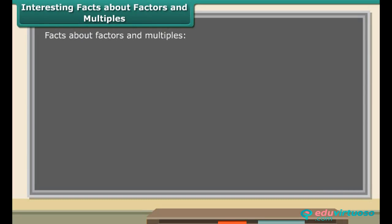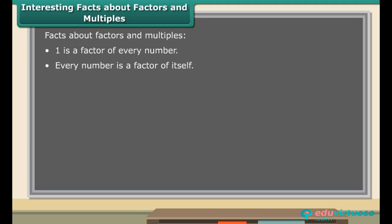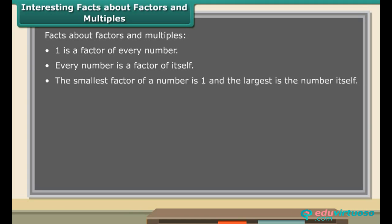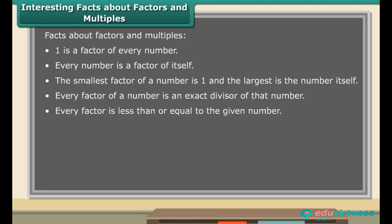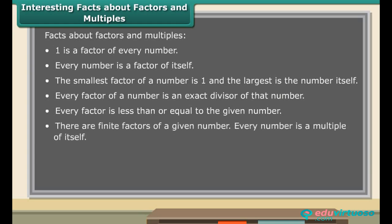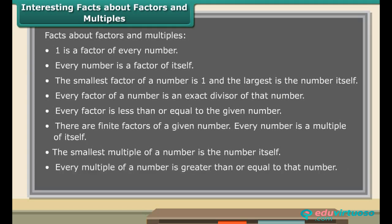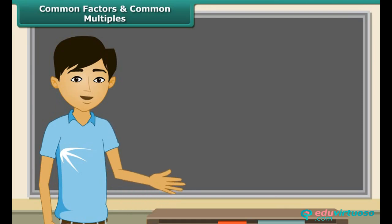Here are some interesting facts about factors and multiples. 1 is a factor of every number. Every number is a factor of itself. The smallest factor of a number is 1 and the largest is the number itself. Every factor of a number is an exact divisor of that number. Every factor is less than or equal to the given number. There are finite factors of a given number. Every number is a multiple of itself. The smallest multiple of a number is the number itself, and multiples of a number are always greater than or equal to that number. There are infinite multiples of a given number.